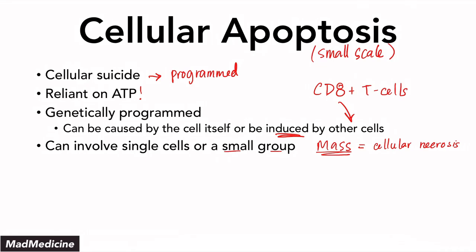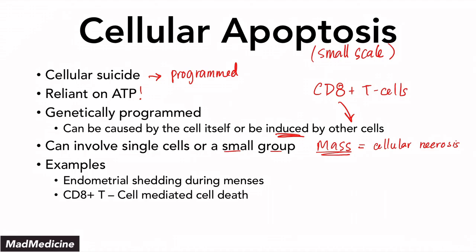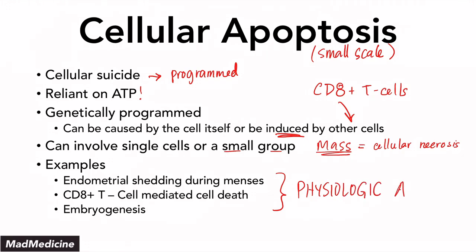Some examples of cellular apoptosis that occur physiologically and normally are: the endometrial lining that sheds during menses, CD8-positive cytotoxic T cells that can induce cellular apoptosis on other cells, and embryogenesis. In embryogenesis, you do have apoptosis occurring — you might think it's just growth, but apoptosis is actually taking place. These are physiologic apoptosis processes.